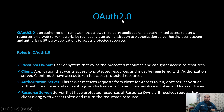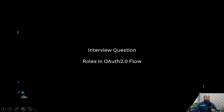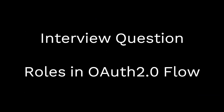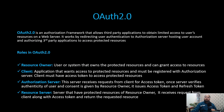Now when we work in OAuth 2.0, we deal with four types of roles. This is also one of the interview questions — what are the different roles that we deal with while working in OAuth 2.0? So there are four roles: resource owner, client, authorization server, and resource server.